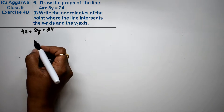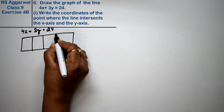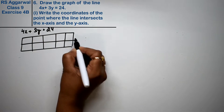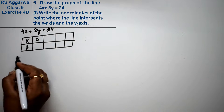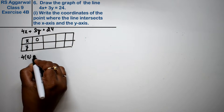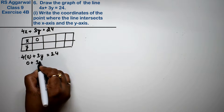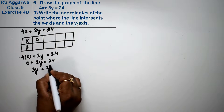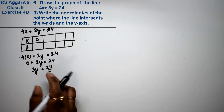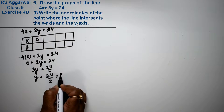Now we will create a table here. We will create 4 points, because the more points you create, the more accurate your line becomes. So, if x is 0, then how much is y? 4 into 0 plus 3y equals 24. That gives us 0 plus 3y equals 24, so y equals 8.